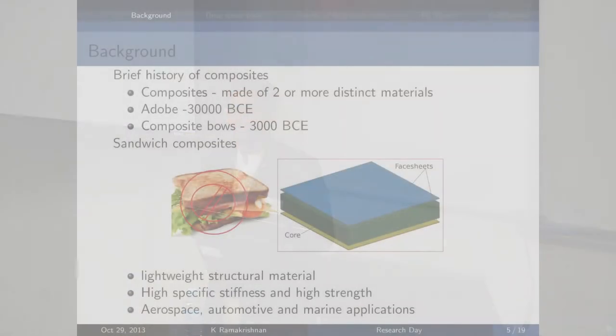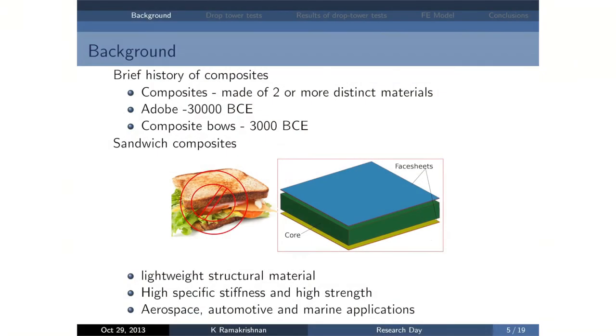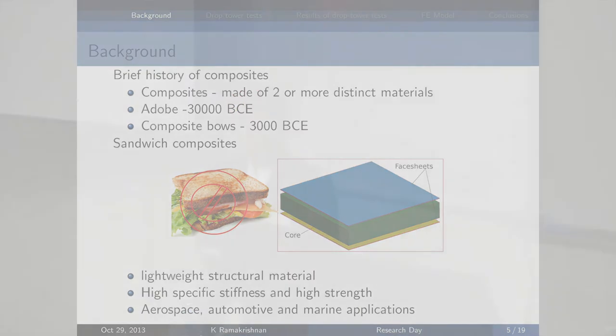Composites are a class of materials made of two or more distinct materials to give tailored properties. These aren't a new invention — they have been around for a long time. Adobe, which was used as a construction material way back in 30,000 BCE, used clay and straw. Composite bows have been around for 5,000 years. So composites aren't exactly new.